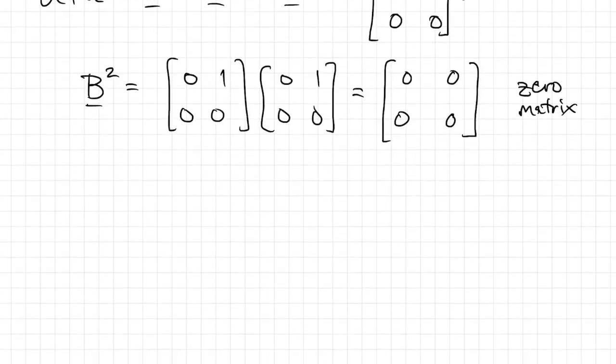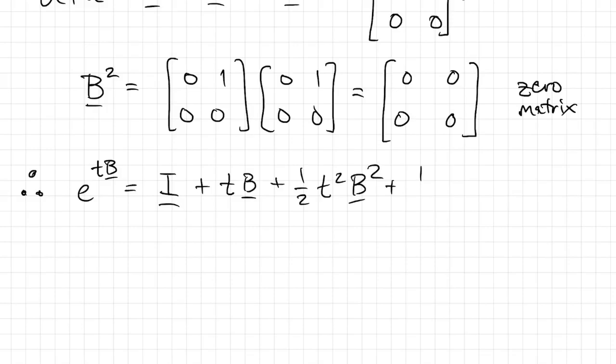That's actually very interesting to us, because if we look at the series for e to the tB. Well, B squared is 0, and if we multiply it by B again, that's 0. They're all 0 from there on. And so this infinite series actually just has two terms in it.